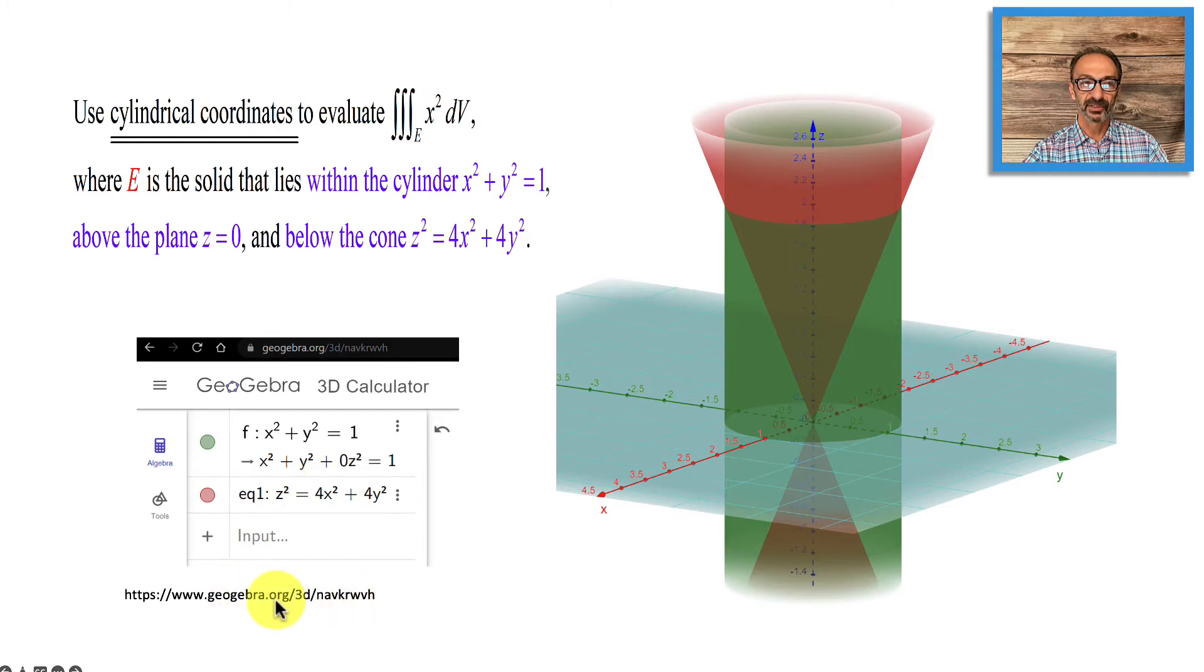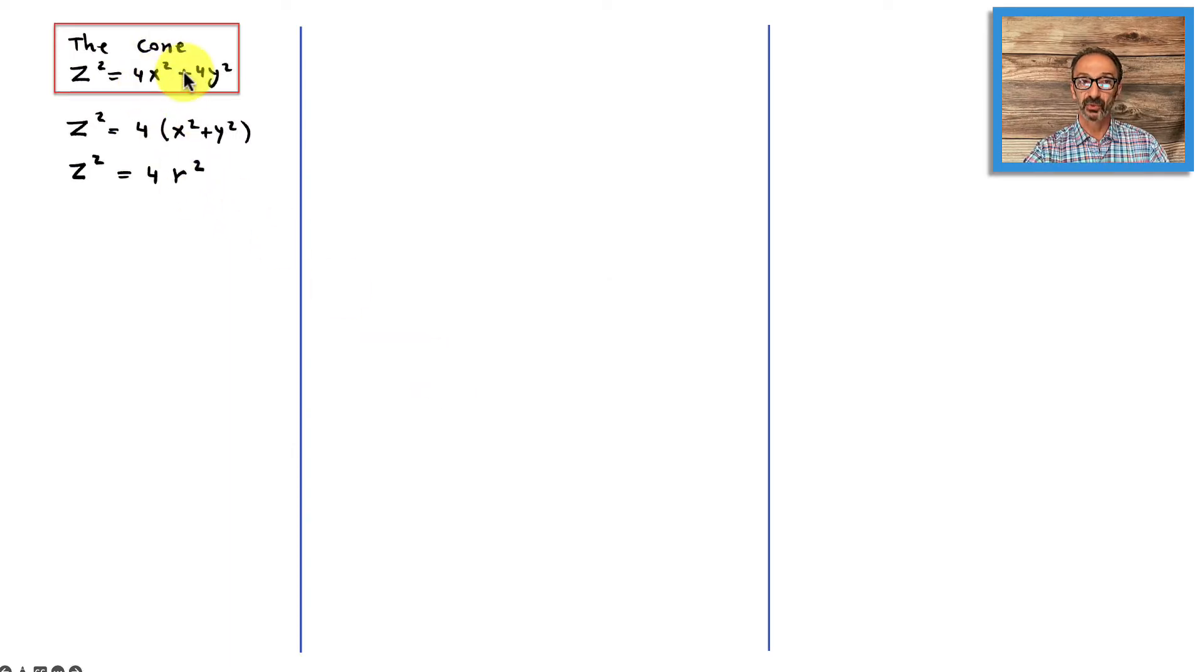I will provide this link in the description below. Now, the cone z squared equals 4x squared plus 4y squared could be simplified by taking the 4 out. We have x squared plus y squared, which is r squared. In a simple way to say it, we are having z equals 2r. So let's keep that in mind. The cylinder x squared plus y squared equals 1, we call it a cylinder because we are in 3D. If it's not 3D, it's going to be a circle. That's what we have: our triple integration of x to the second dV.